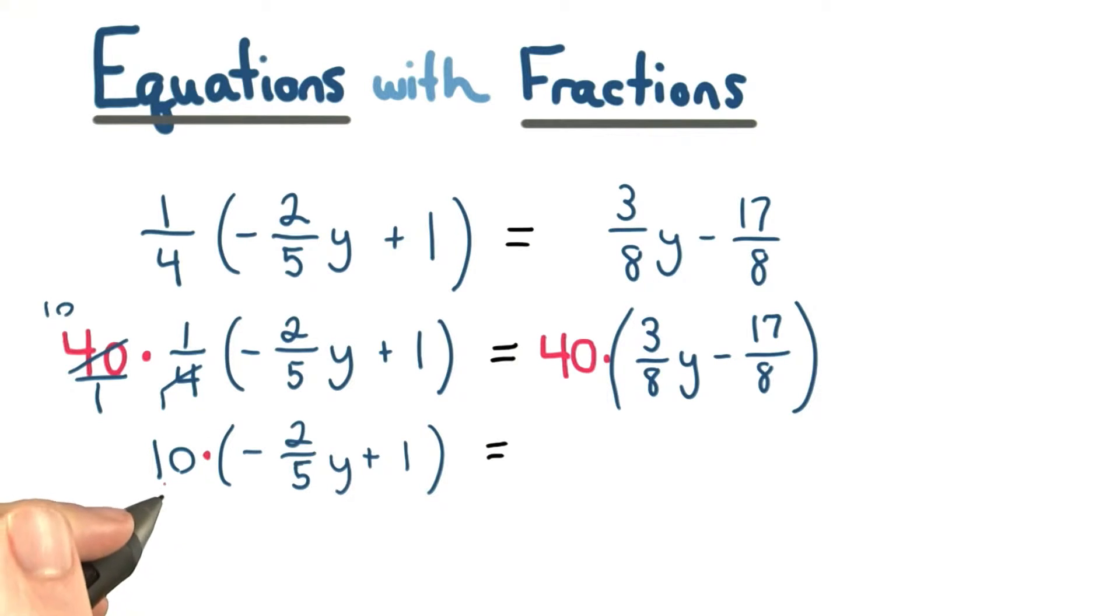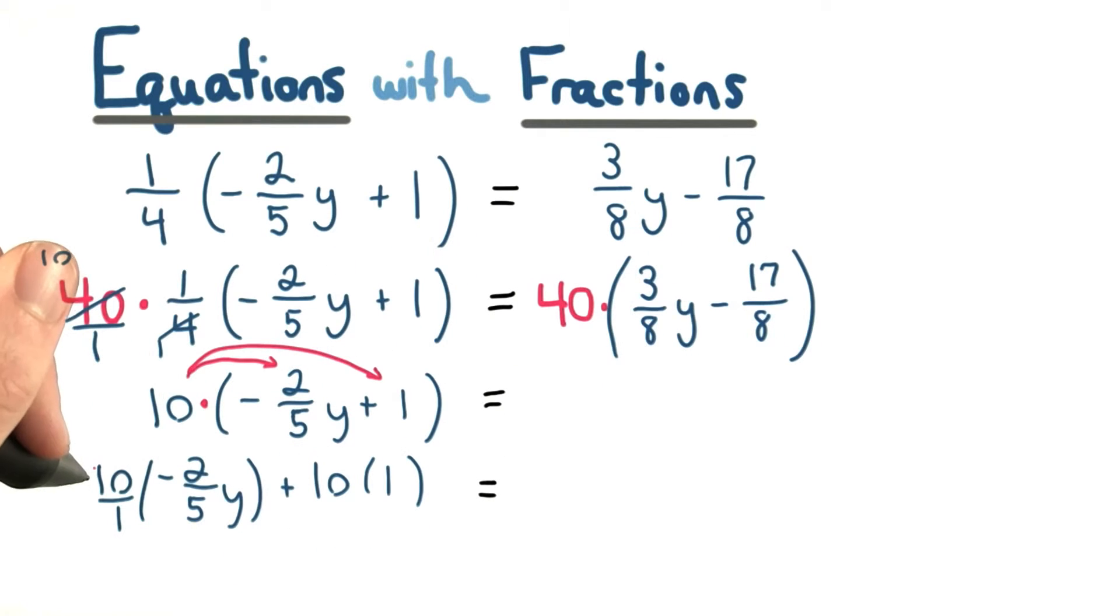Now I'm going to distribute or multiply this 10 into this inside parentheses. I have 10 times negative 2 fifths y here, and I have 10 times 1 here. I can reduce a common factor of 5 in the numerator and the denominator, so I get negative 4 over 1, or negative 4y, and then I have my 10 on the end.